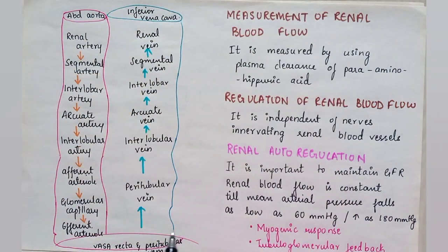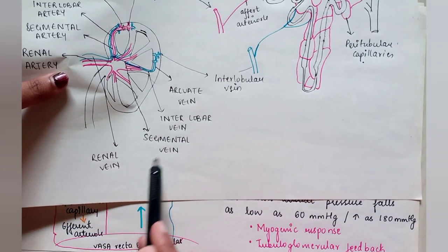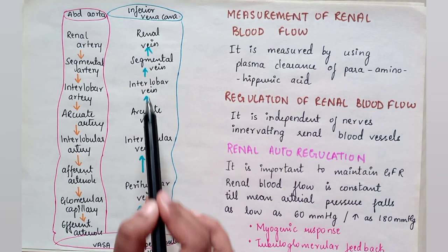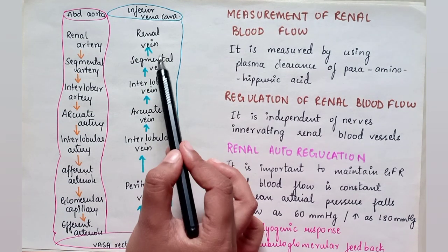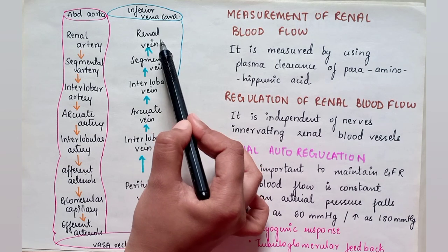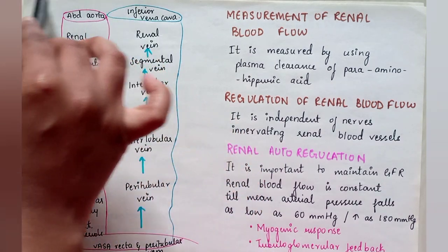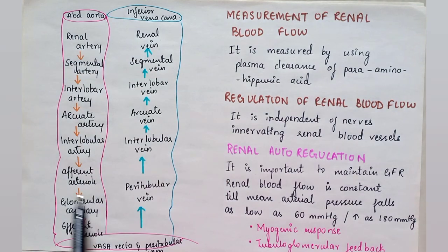From there, it filtrates and then goes to the peritubular vein, through which the series continues as: interlobular vein, arcuate vein, interlobar vein, segmental vein, renal vein, and finally to the inferior vena cava. This is how the blood travels through the kidneys.